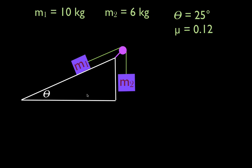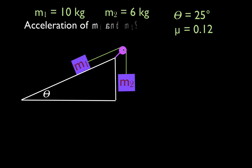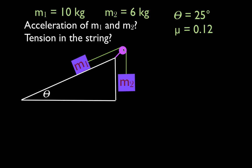This is our incline plane, inclined at an angle of 25 degrees. M1 is on the incline plane at 10 kilograms. M2 is hanging off of that pulley with that string at 6 kilograms. Between M1 and the incline plane there is friction — the coefficient of friction is 0.12. These two objects are attached by the massless inelastic string passing over the massless frictionless pulley, so we can ignore the mass of the string and any energy lost in turning the pulley.